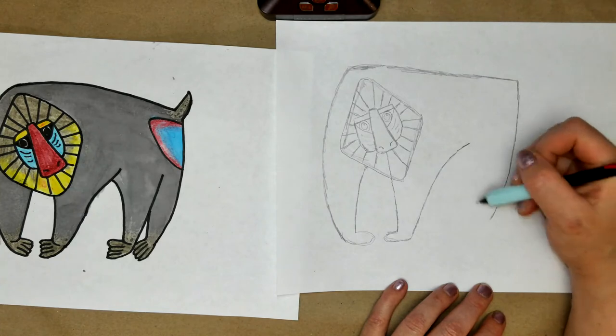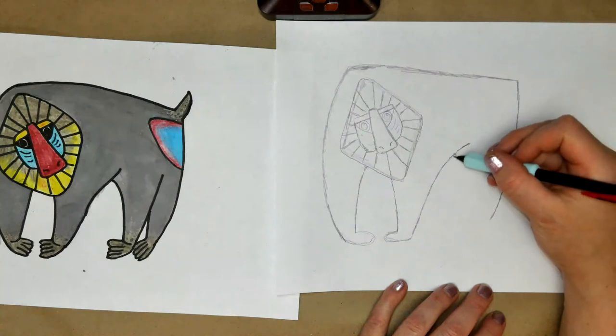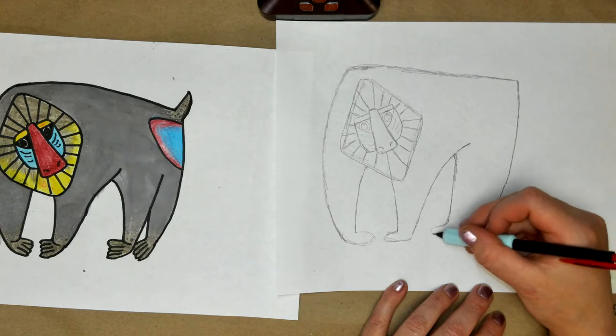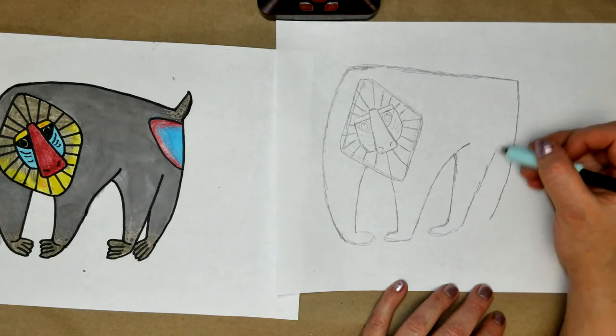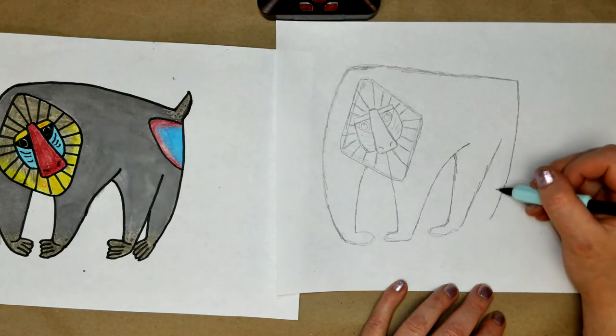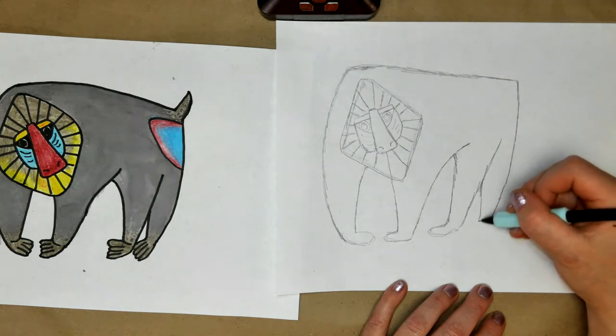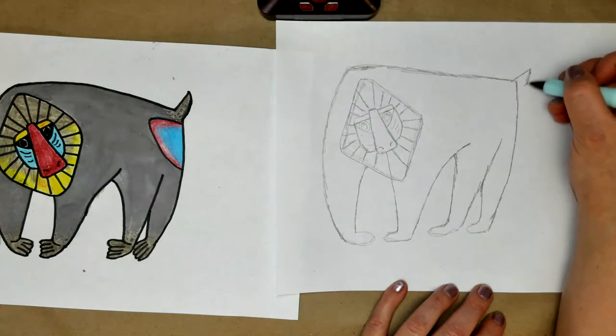Now we're going to give him his front and his back legs. So we're going to come underneath where we stopped, come underneath right there and go down, give him his little space for his hand and up. And then this one we're going to start further down that line, come in, give him that space for his little hand.